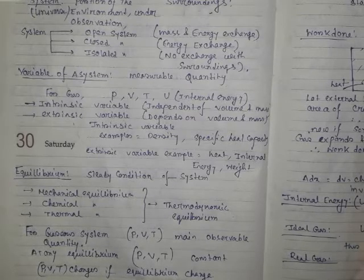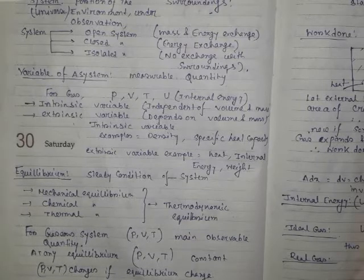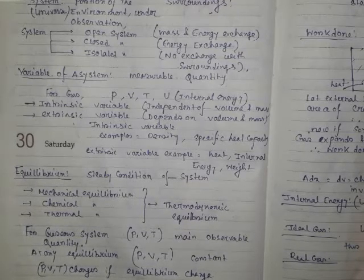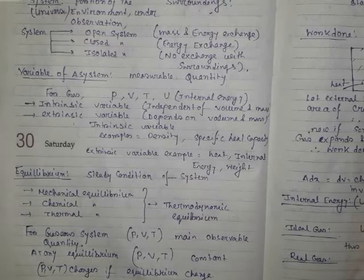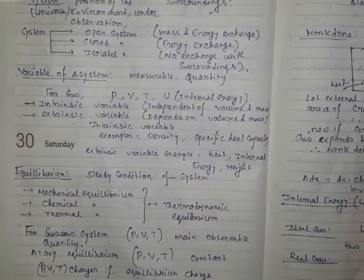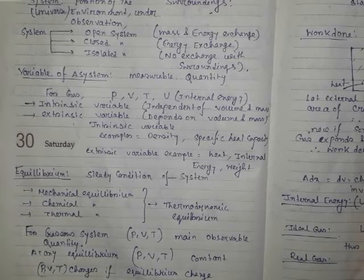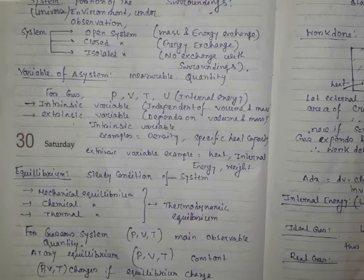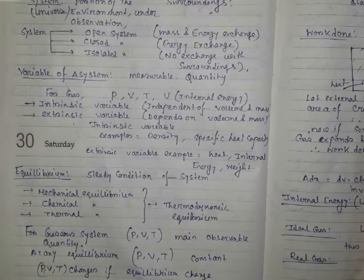For thermodynamics we consider three types of equilibrium: mechanical equilibrium, chemical equilibrium, and thermal equilibrium. Mechanical equilibrium means the system does not have any kind of unbalanced force on it. Forces may be present but must be balanced, so the system must not have any acceleration or deformation.